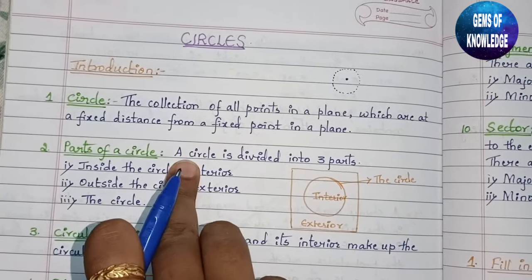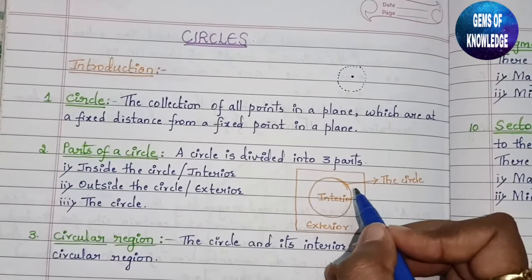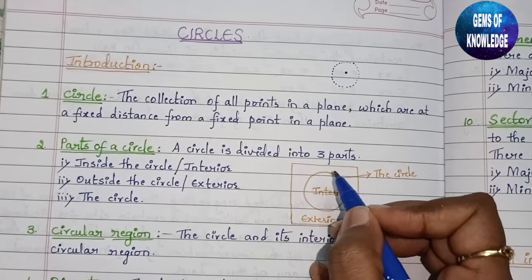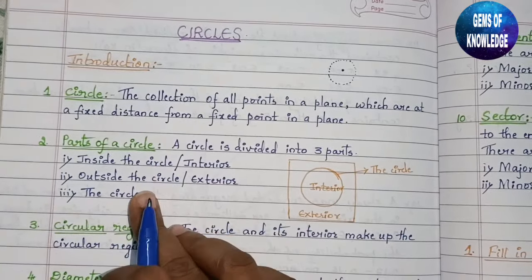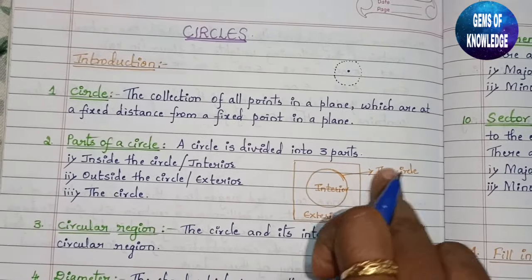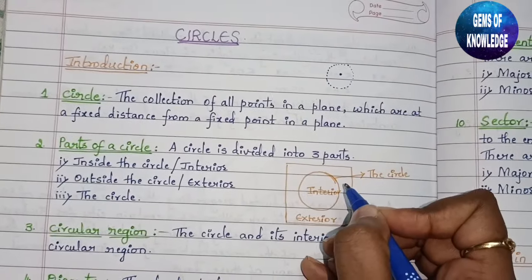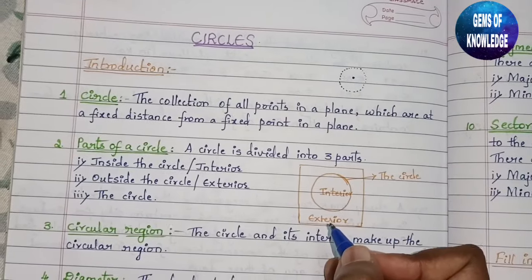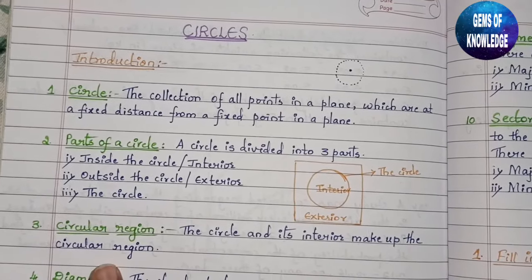Now, a circle has three parts. One is the interior — inside the circle. Second is the exterior — outside the circle. And third is the circle itself. So the three parts are: the interior of the circle, the exterior of the circle, and the circle itself.